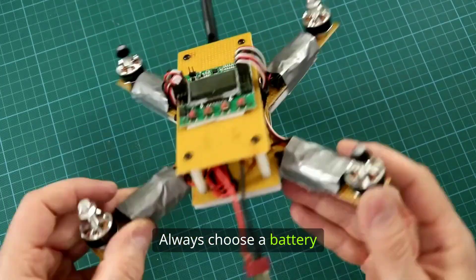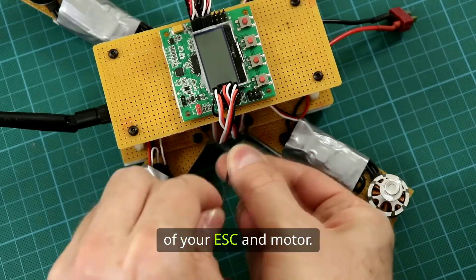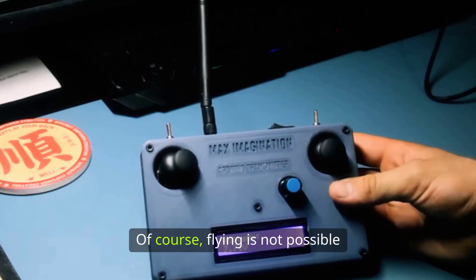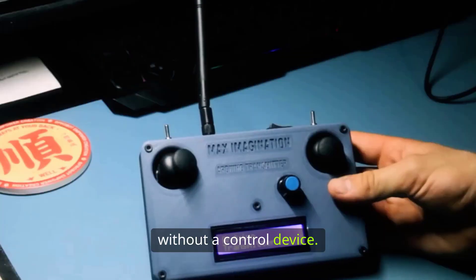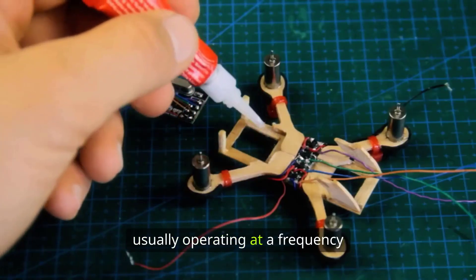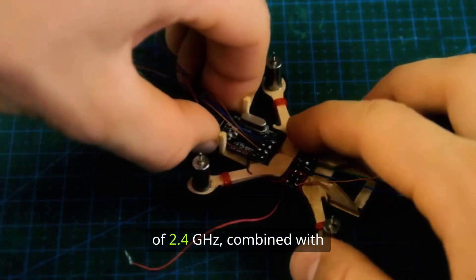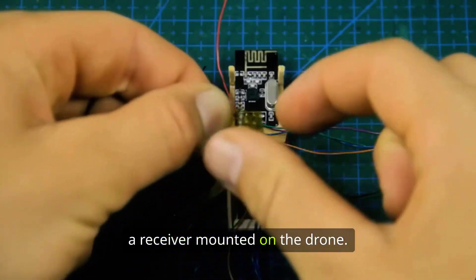Always choose a battery with an output power suitable for the requirements of your ESC and motor. Of course, flying is not possible without a control device. A basic radio transmitter, usually operating at a frequency of 2.4 GHz,